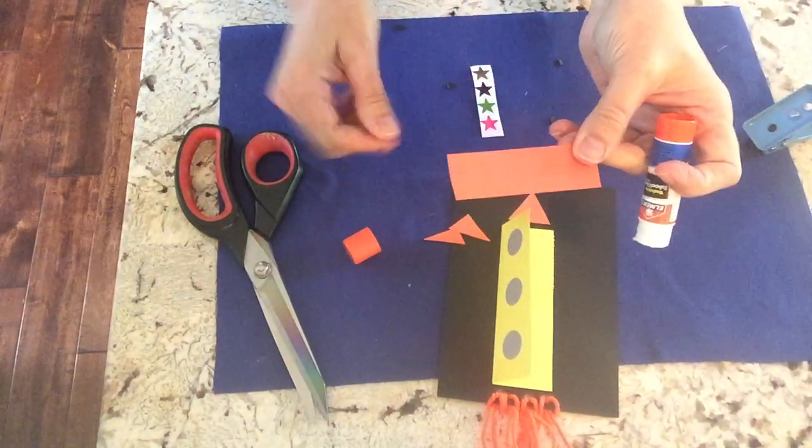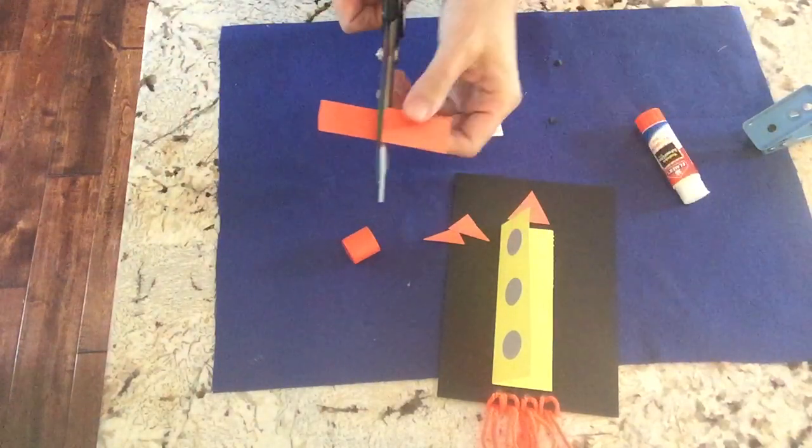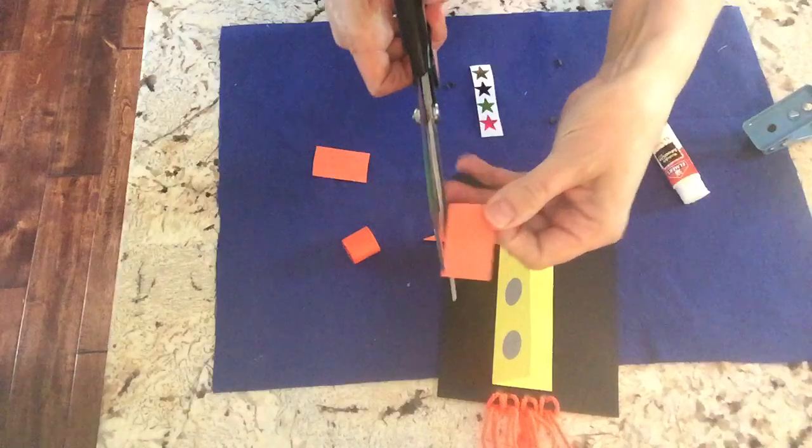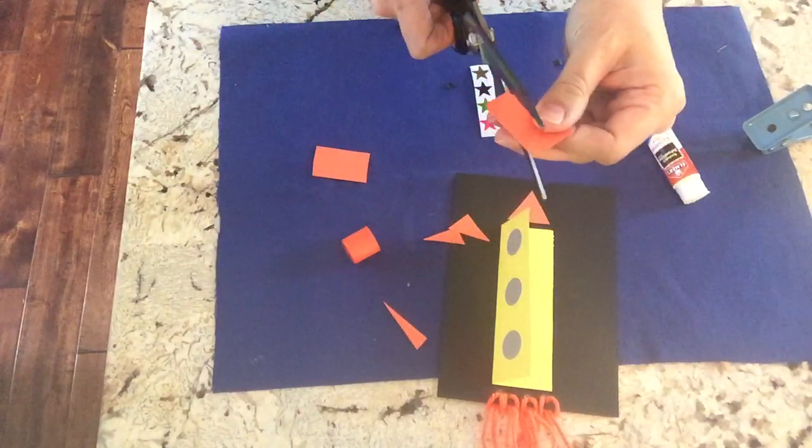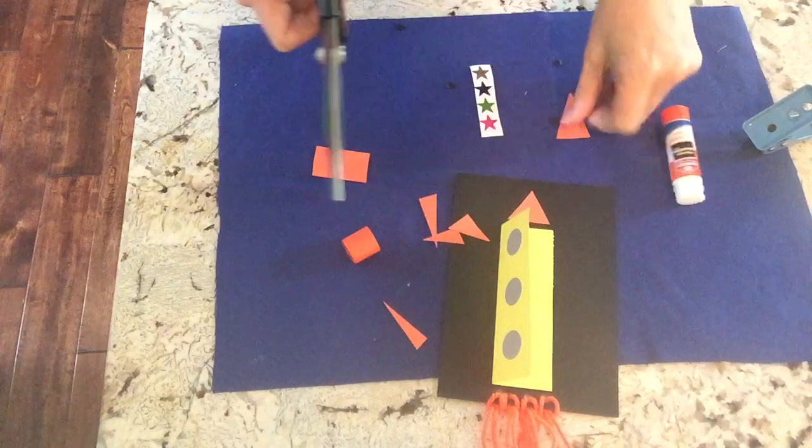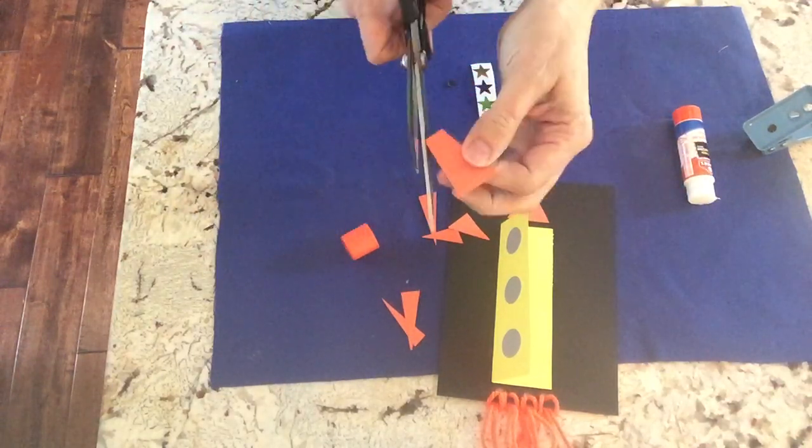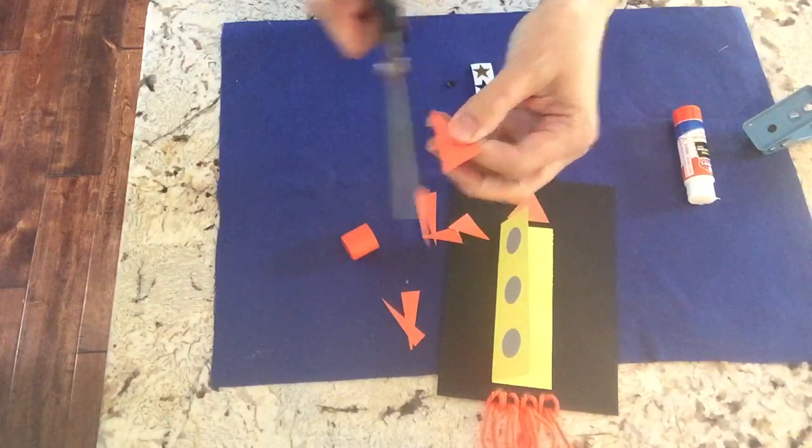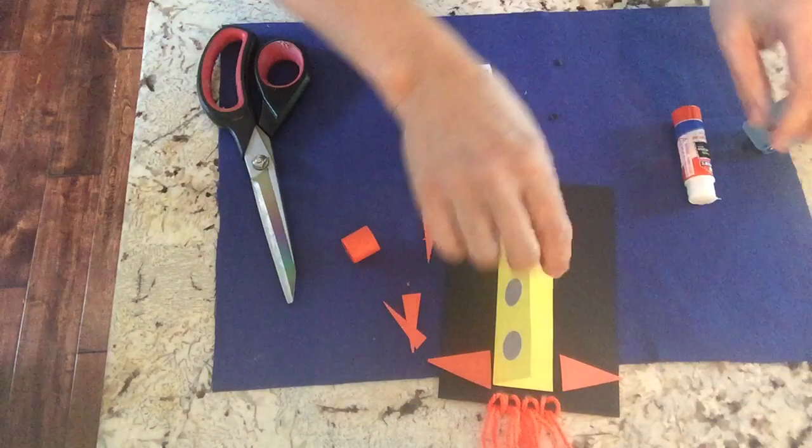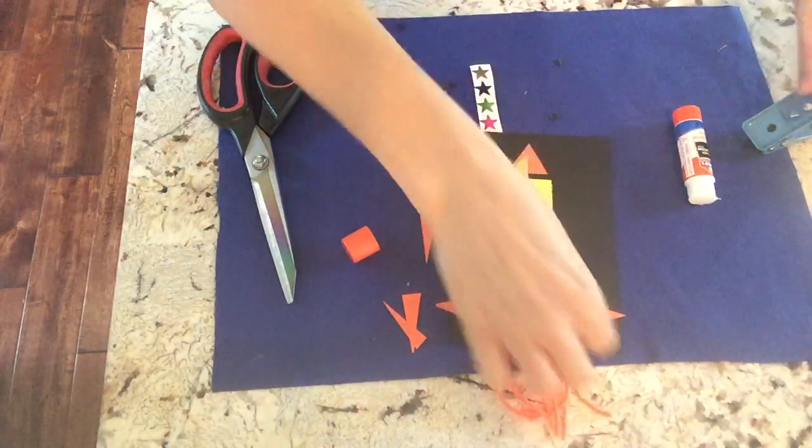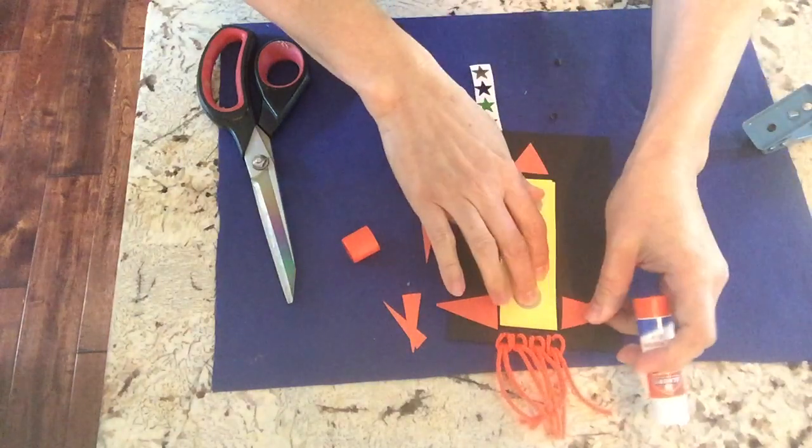And now we'll take this other piece. Cut it in half. And again, start at the corners. And then just go all the way up to the top. Cut those off. Cut down to the corner. Doesn't matter if they're not perfect. And now we're gonna glue those on the bottom coming out of the rocket.